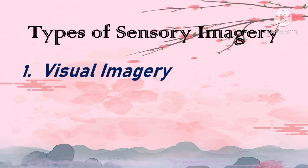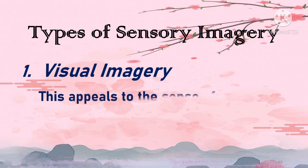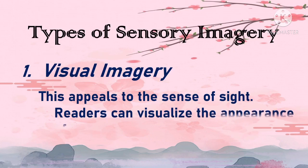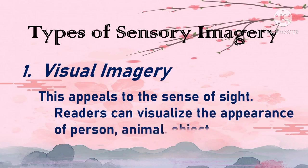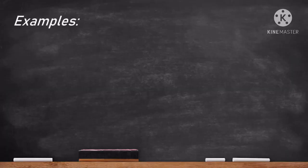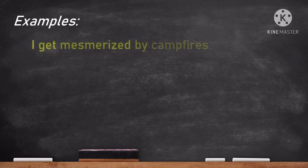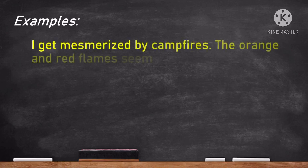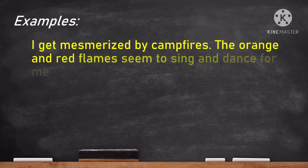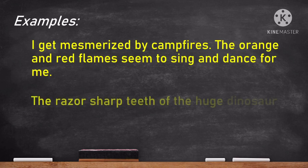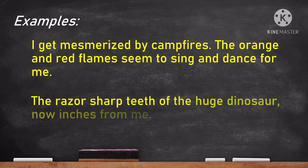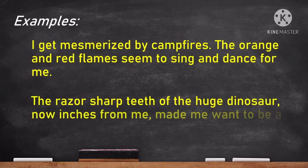The first type is visual imagery. This appeals to the sense of sight — readers can visualize the appearance of a person, animal, object, place, or phenomenon. Examples of visual imagery: 'I get mesmerized by campfires; the orange and red flames seem to sing and dance for me.' 'The razor-sharp teeth of the huge dinosaur, now inches from me, made me want to be a dentist.'